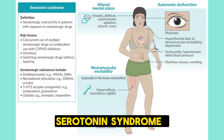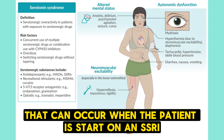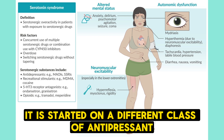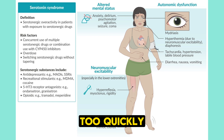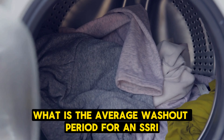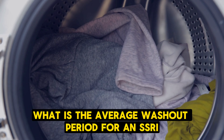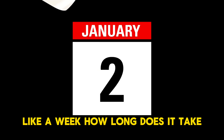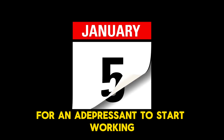Serotonin syndrome can occur when a patient is started on an SSRI and then started on a different class of antidepressant like an MAOI too quickly. What is the average washout period for an SSRI? About a week. How long does it take for an antidepressant to start working? Four to six weeks.